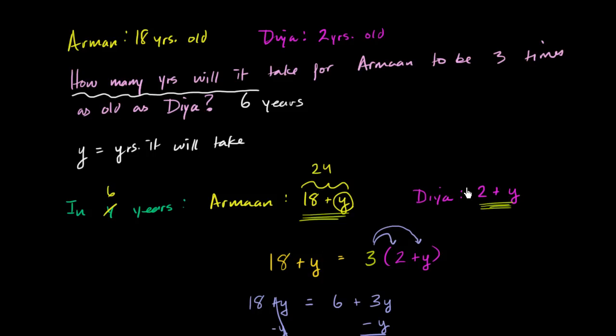How old is Dia going to be? Well, she's going to be two plus six, which is eight years old. And lo and behold, 24 is indeed three times as old as eight. In six years, Armand is 24, Dia is eight, Armand is three times as old as Dia. And we are done.